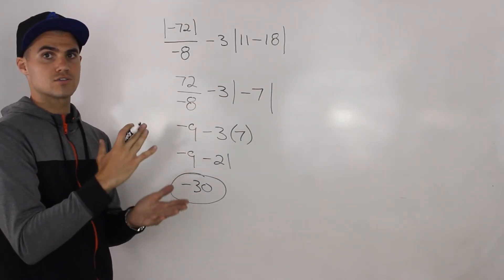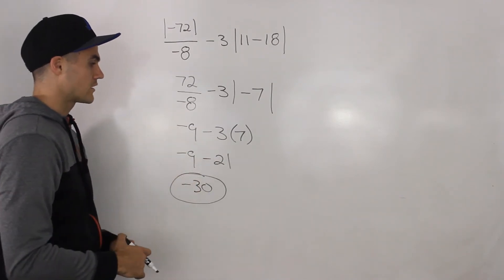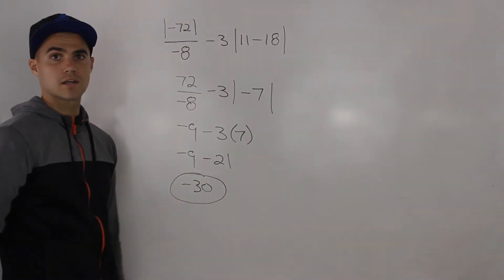Change them all into positive single values, and then it just becomes like a regular expression. You end up getting negative 30.